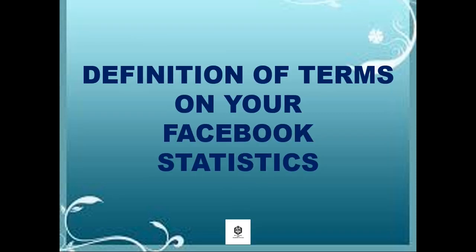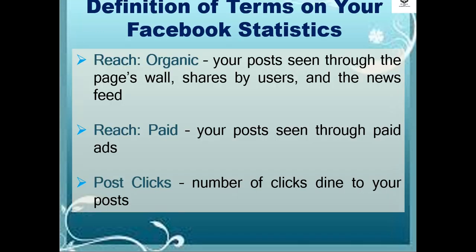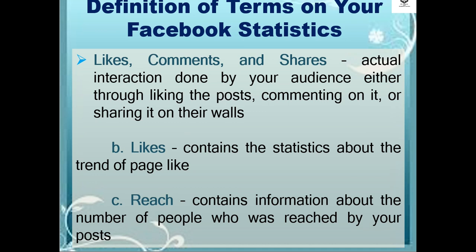Let's proceed to the definition of terms on your Facebook statistics. Reach Organic: your post seen through the page wall, shares by users, and the news feed. Reach Paid: your post seen through paid ads. Post Clicks: the number of clicks going to your post. Likes, Comments, and Shares: actual interaction done by your audience either through liking the post, commenting on it, or sharing it on their walls.